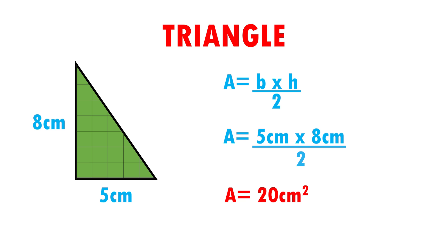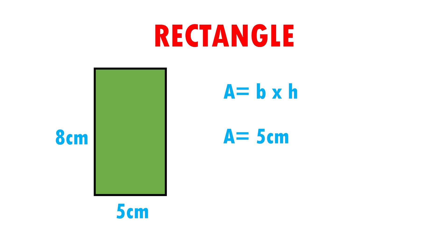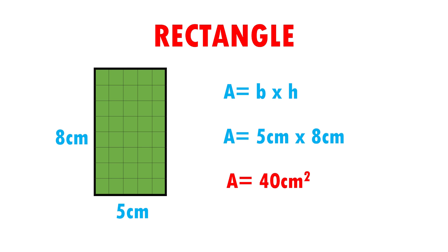Let's see another example. Here I have a rectangle with measures of 5 cm base and 8 cm height. The formula to calculate the area of a rectangle is base times height. We are going to substitute data. Area is equal to 5 cm from the base times 8 cm high. Therefore, 5 times 8 gives me 40 cm squared as a result. This means that our rectangle can fit 40 squares of 1 cm per side.